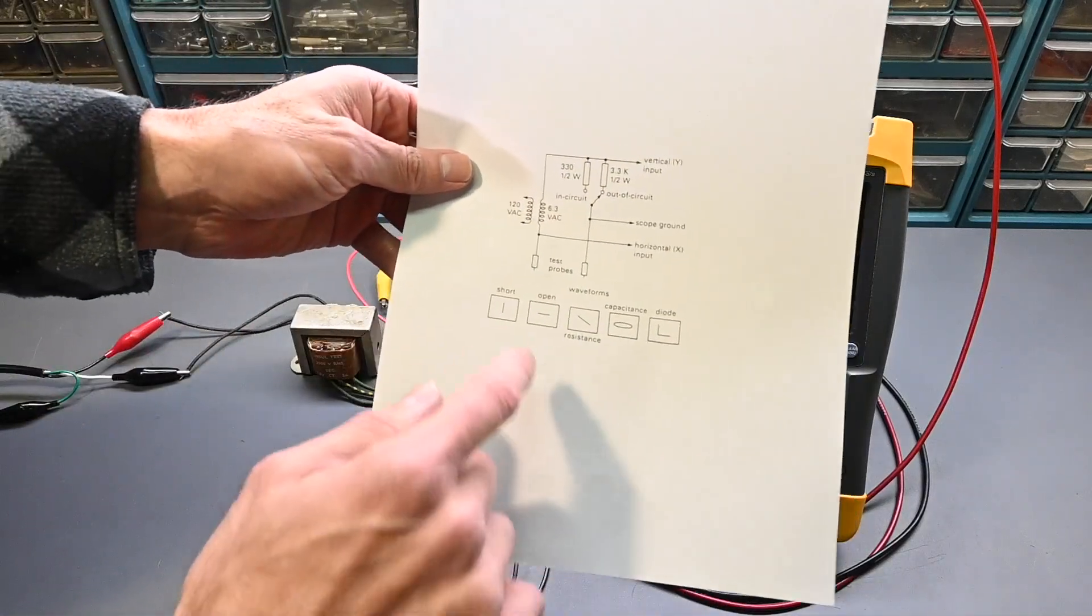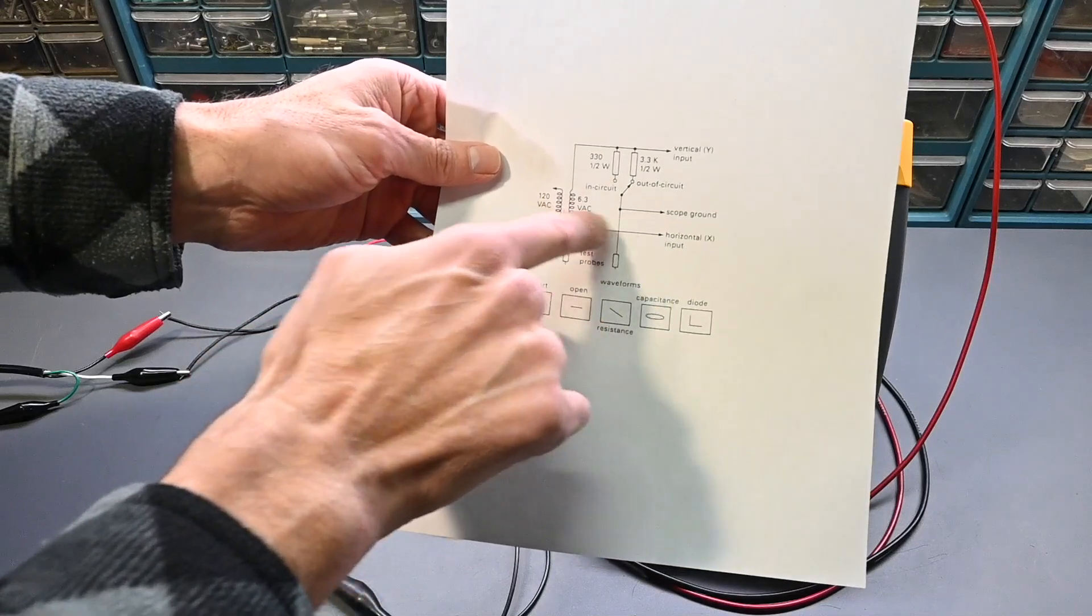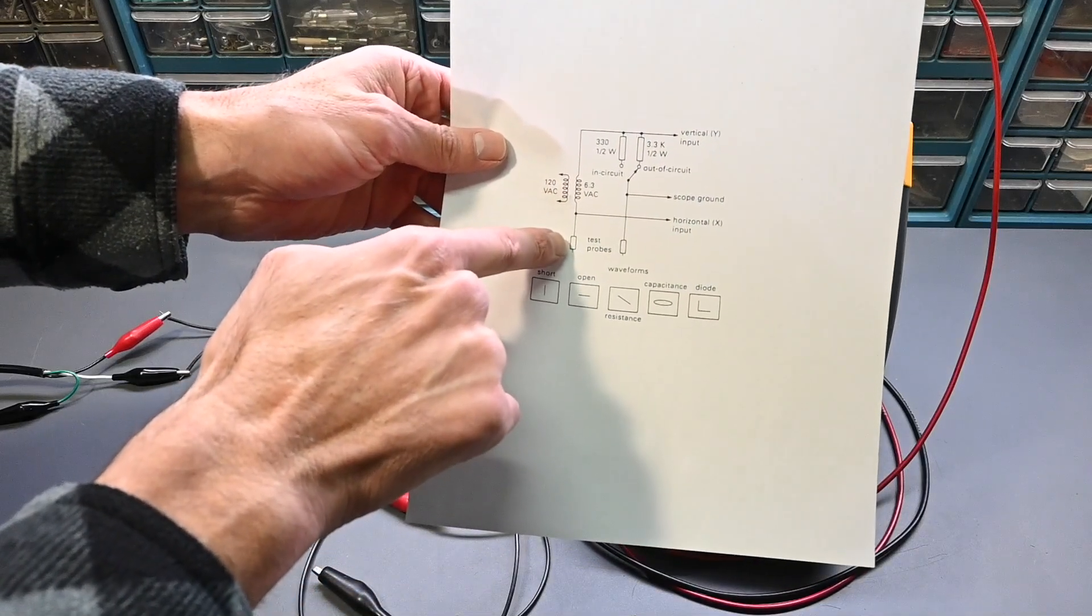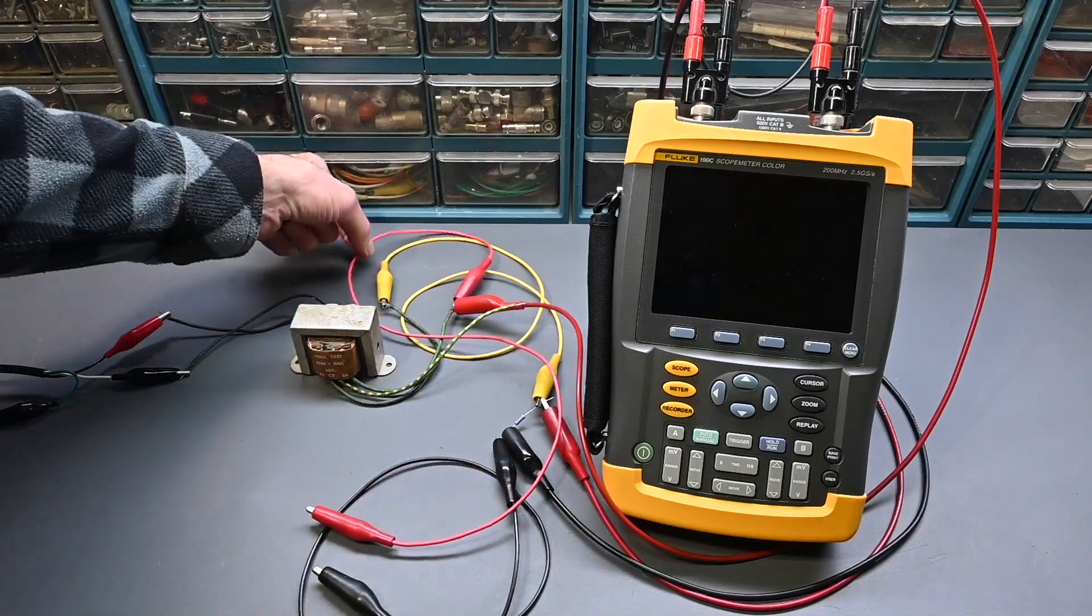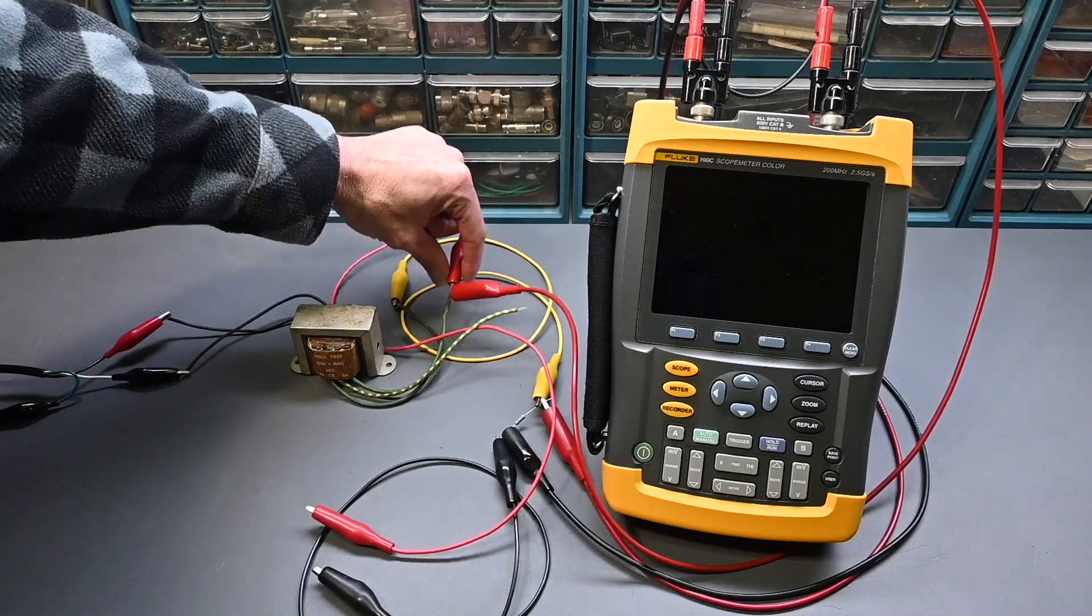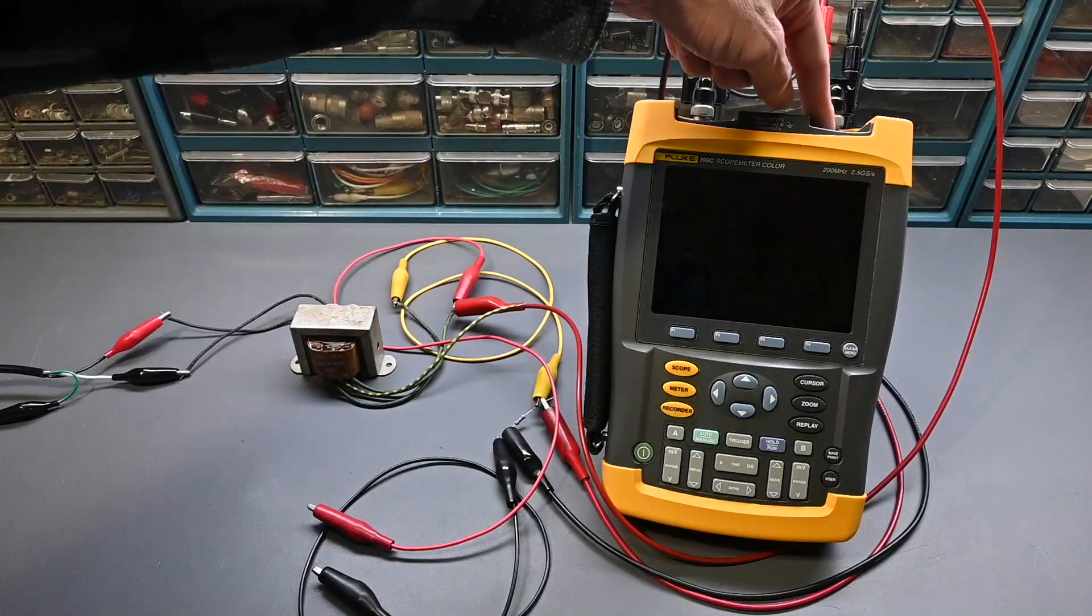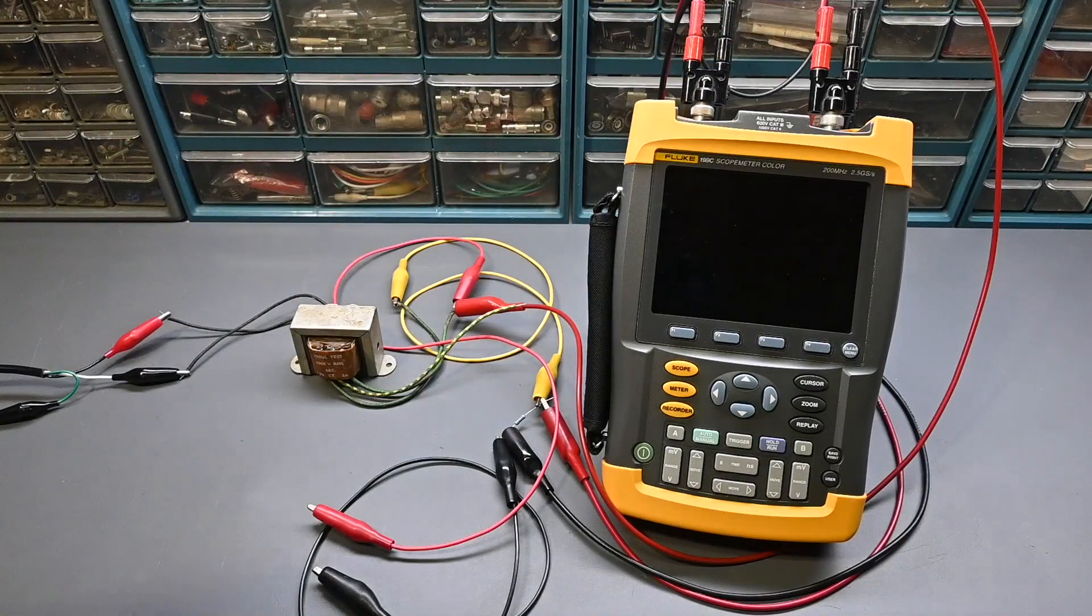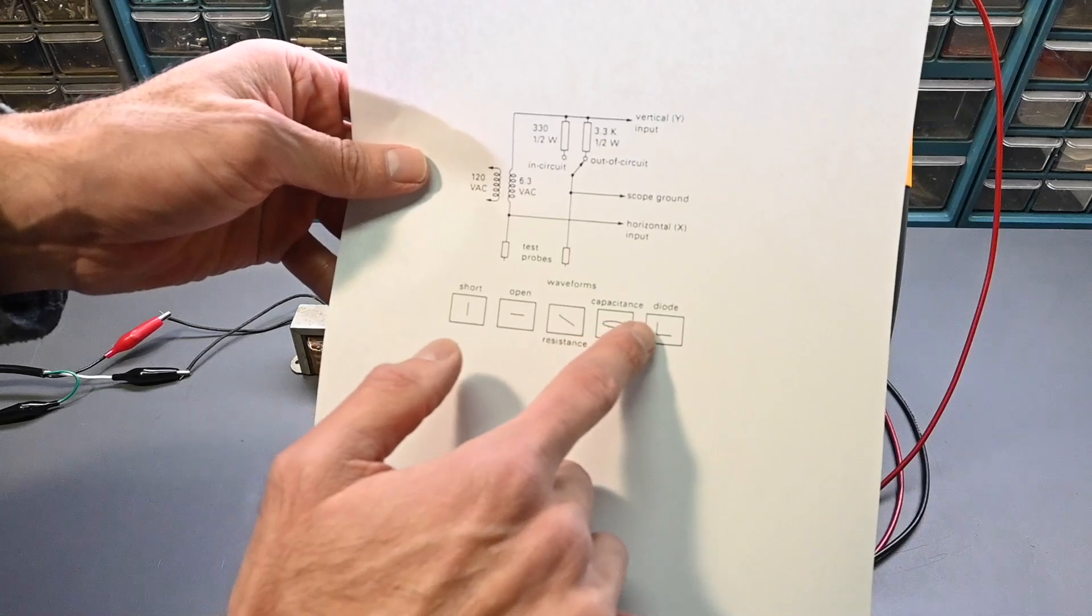Looking at the schematic again, the other side of the transformer goes to the horizontal or X input on the oscilloscope and comes down to the other test probe. These patterns you can see down here are the displays we'll be seeing on the oscilloscope. When we have a short circuit, there is a vertical line. An open circuit is a horizontal line. Resistance ends up being some type of sloping line between these two extremes. Capacitance is an open circle. In a diode, you see this L shape. If you test a Zener diode, you'll see another knee in that L shape. We can also test inductors, where instead of having the circle going around on the horizontal axis, you'll see it more on the vertical axis.